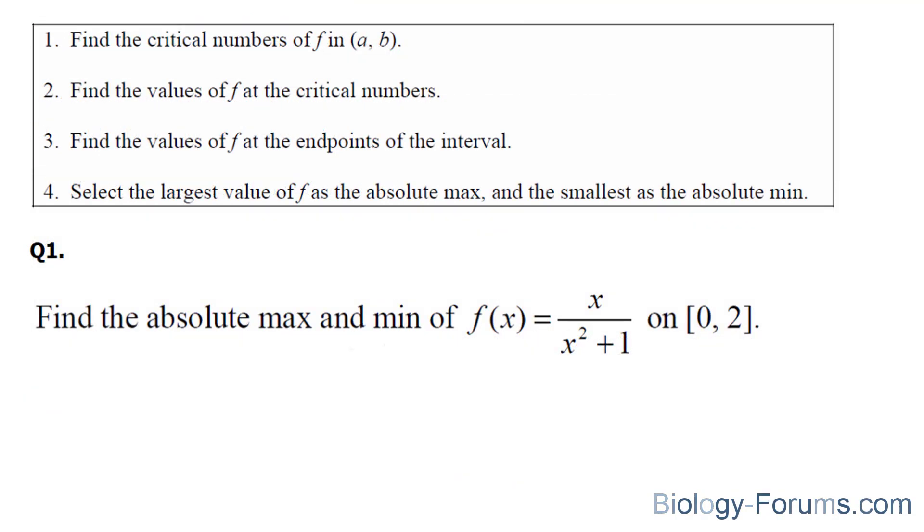Let's do an example. Here, we're asked to find the absolute maximum and minimum values of f at x is equal to x over x squared plus 1 in the intervals 0 to 2. Now, in our previous video, I did show you how to find the critical numbers, so we'll use that as a starting point.